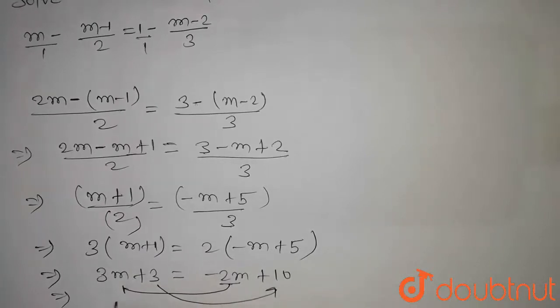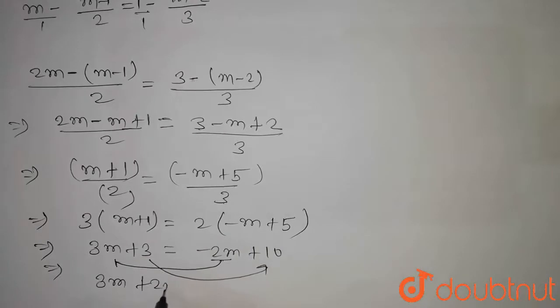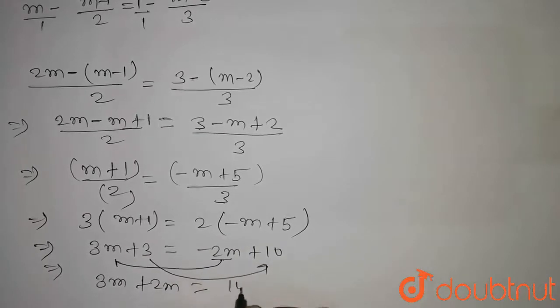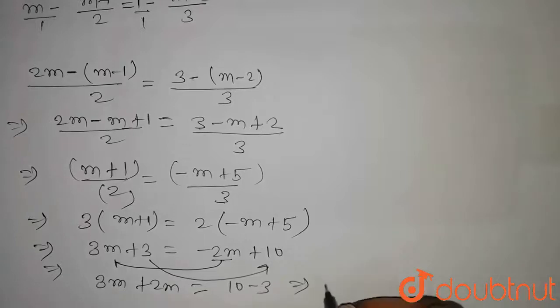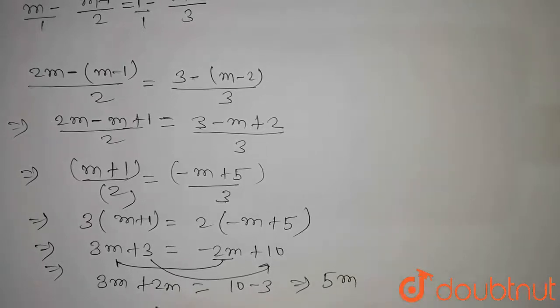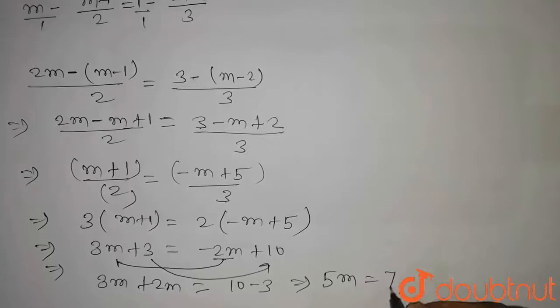Then we get 3m plus 2m equal to 10 minus 3. So it will become 5m equal to 7.